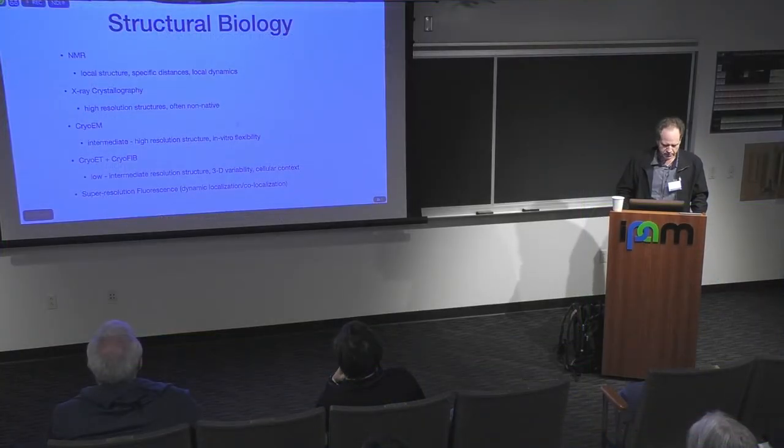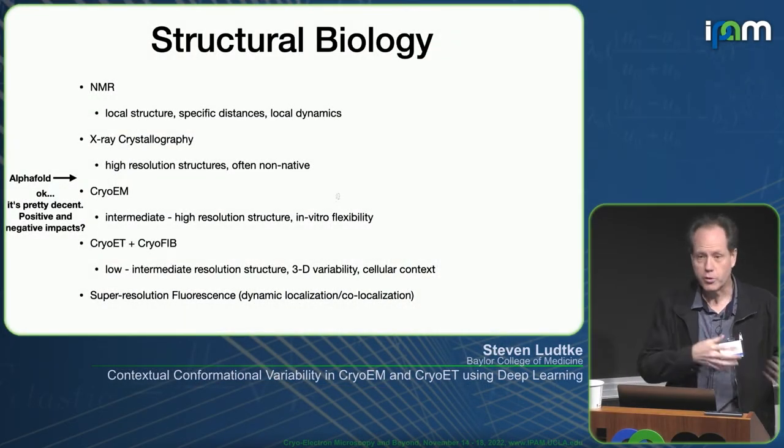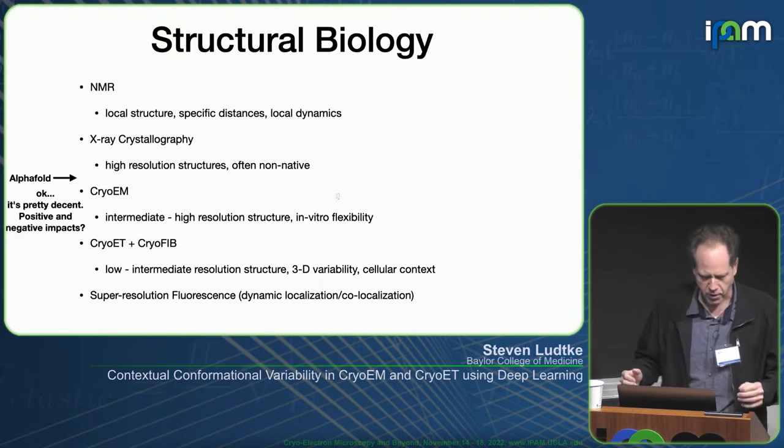Fairly recently AlphaFold happened, and it had a tremendous impact on the structural biology field — we've got some sort of structure now of just about everything, and for the most part the structures seem to be pretty good. This has a lot of positive impact, but also some negative: not all the structures are perfect. Some of them just wrap around the whole thing, so there are definitely failure cases, and it isn't always going to be clear which ones are reliable and which ones aren't. But by and large, it's certainly going to be a very useful tool.